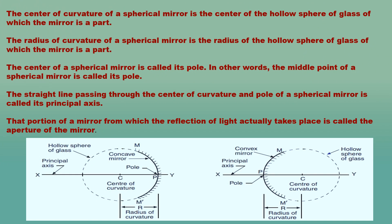We will now understand the meaning of some new terms used in the study of spherical mirrors: center of curvature, radius of curvature, pole, and principal axis. The center of curvature of a spherical mirror is the center of the hollow sphere of glass of which the mirror is a part, represented by the letter C. The center of curvature lies outside the reflecting surface of the mirror. The radius of curvature is the radius of the hollow sphere of glass of which the mirror is a part; it is represented by the letter R, and the distance CP is the radius of curvature.